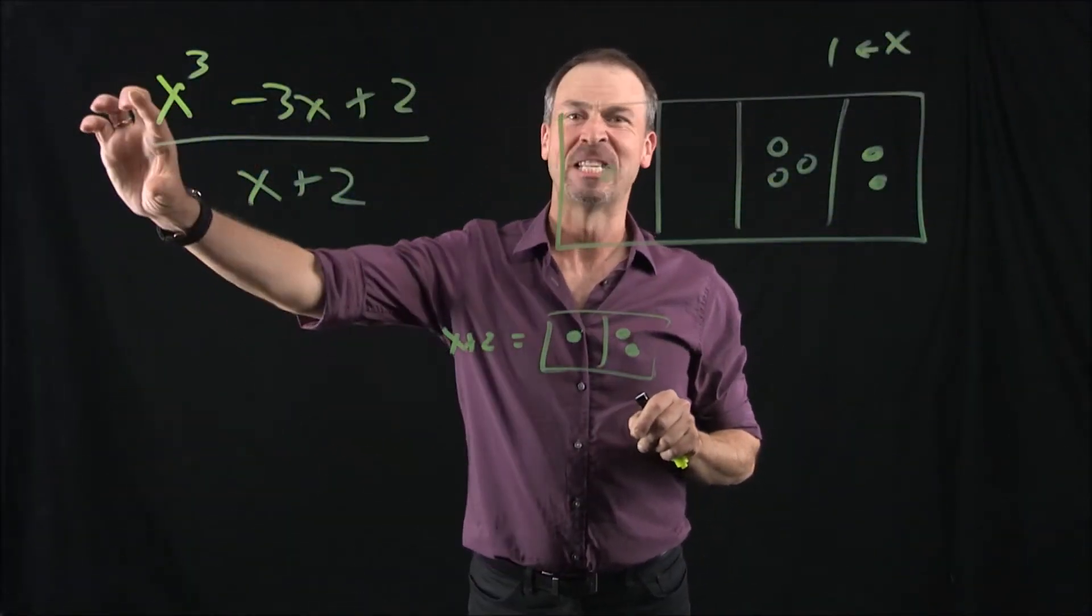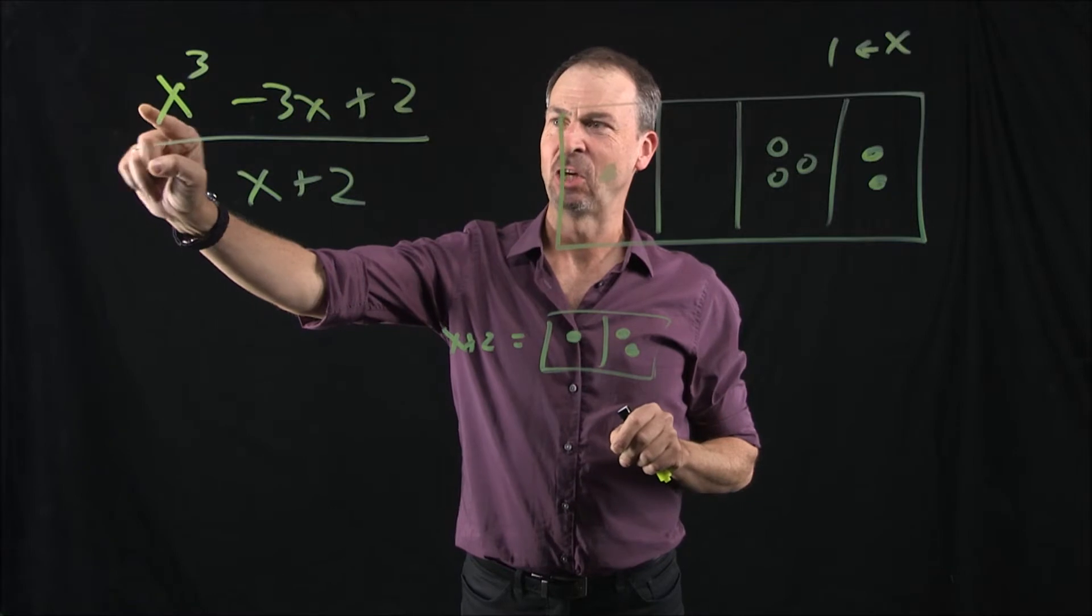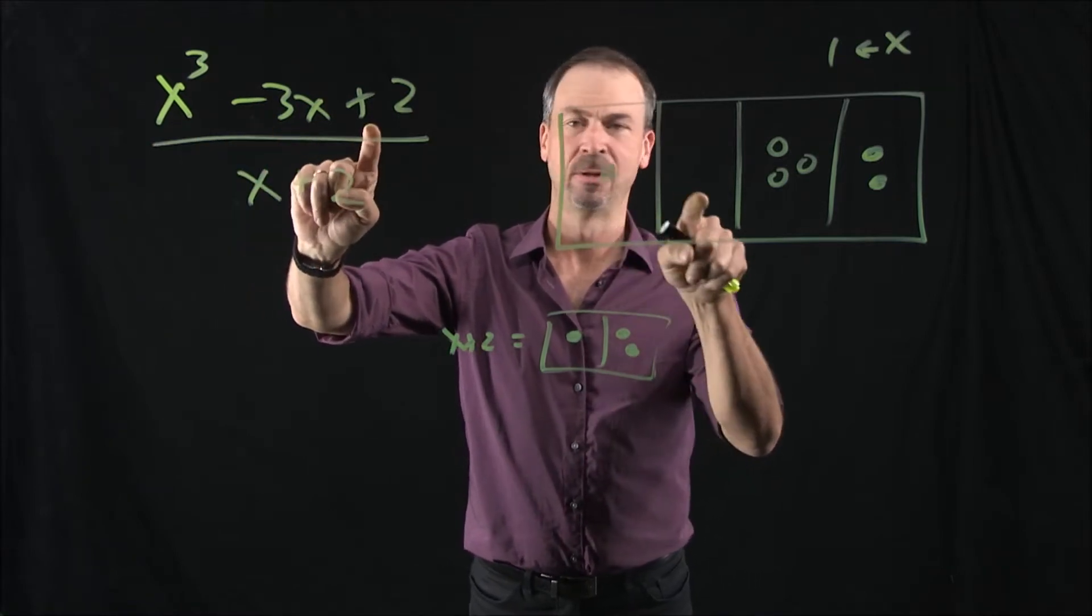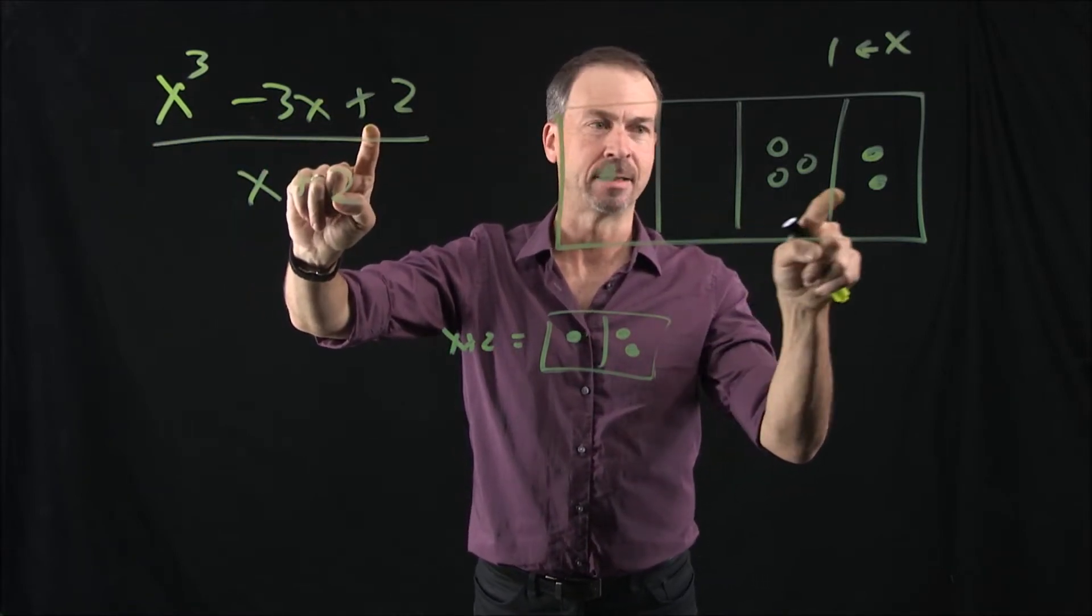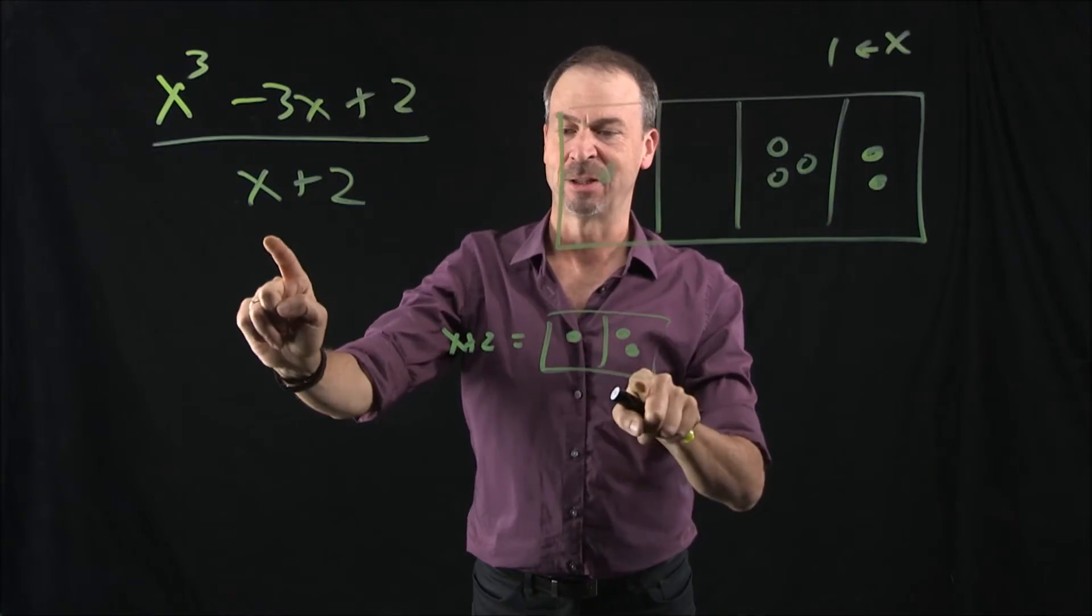Alright, we are stuck on this particular polynomial division: x cubed minus 3x plus 2, x cubed, no x squared, negative 3x's and 2, divided by x plus 2.